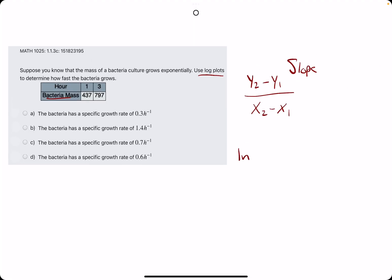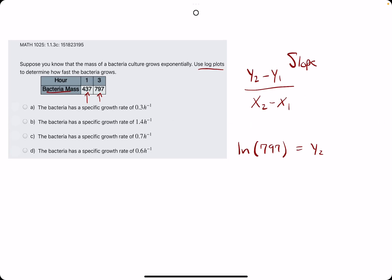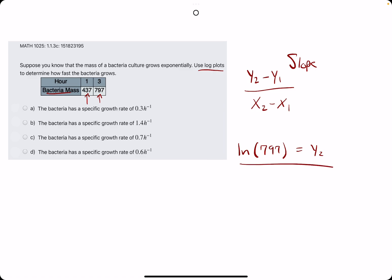So we're going to take the ln of 797. This will give us our y2. So instead of using this as y2 and this as y1, we need to take the ln of each of those values first. And then we will plug these into the slope formula.